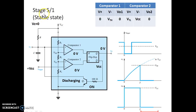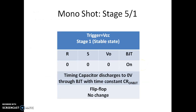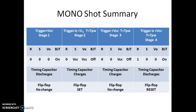Once the capacitor voltage discharges to 0, we are in the fifth stage, which is exactly the first stage of the monoshot. In stage 5, reset and set are both 0, output is 0, BJT is on, capacitor is fully discharged to 0, and the flip-flop is in the no-change condition. The output voltage remains at 0V as long as no trigger is applied. This is the stable state.